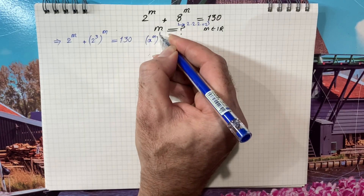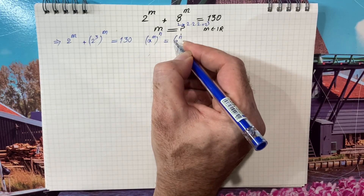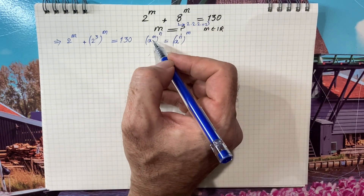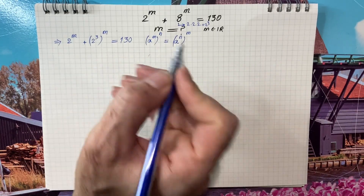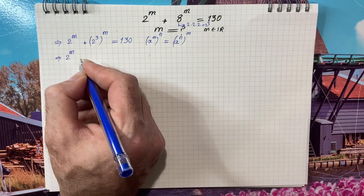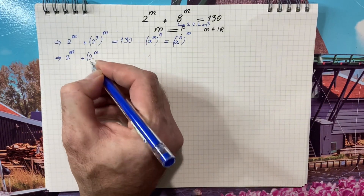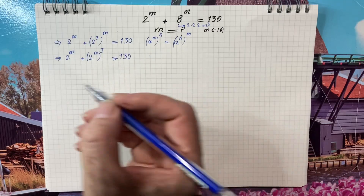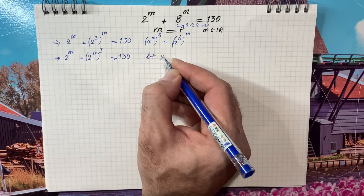Next, we use the exponential rule that says a to the power of m raised to the power of n can be written as a to the power of n raised to m. Using this rule, it is going to be 2 raised to m plus 2 raised to the power of m, and at the end, cubed, equals 130.